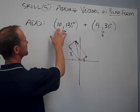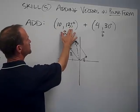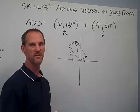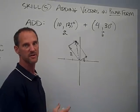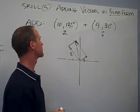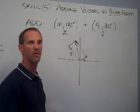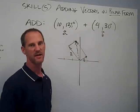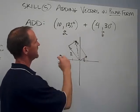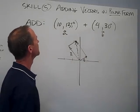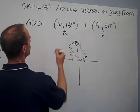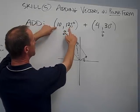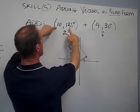The way we do this is we convert to rectangular form — convert Vector A and Vector B to rectangular form, then add them up. When we find the resultant in rectangular form, we convert it back into polar. If you're asked a question in polar form, the expectation is that you answer it in polar form. So 10 times the cosine of 135 gives my x value.